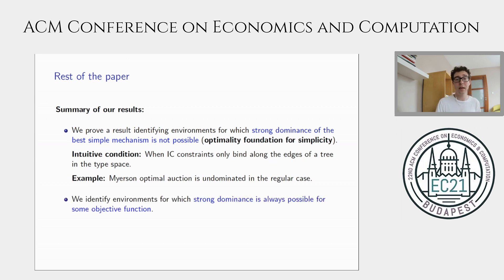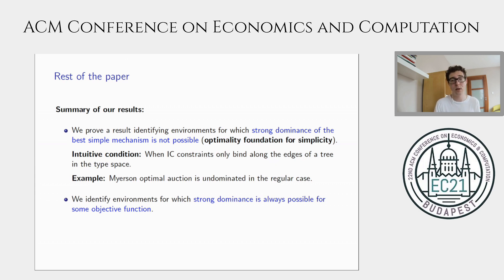We also show more negative results: strong dominance can be extended to many other environments and objective functions. In particular, we identify conditions under which strong dominance is always possible for at least some objective function. Two quick remarks: first, strong dominance is possible even with just one agent, where the designer may use randomization to confuse the agent. Second, strong dominance is not just about revenue maximization or exploiting agents — it can also be helpful to use a complex mechanism when the designer actually cares about the agents' welfare.